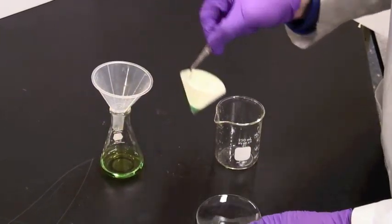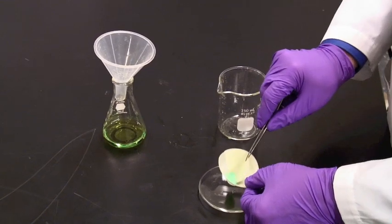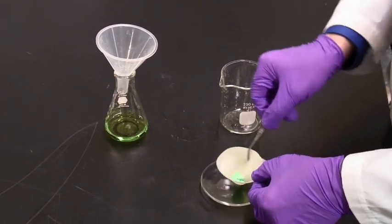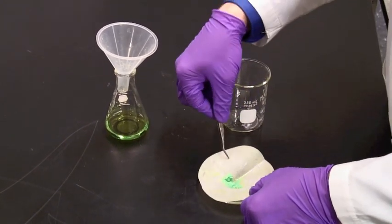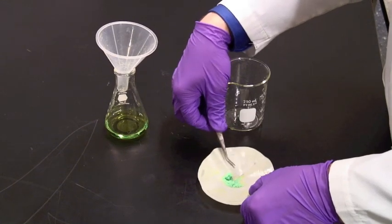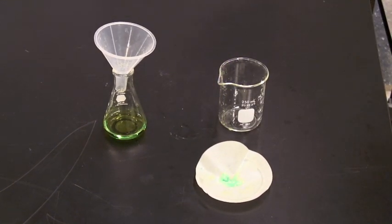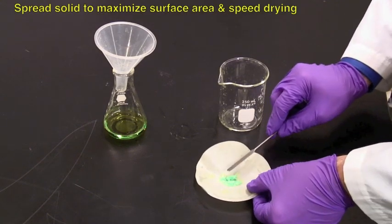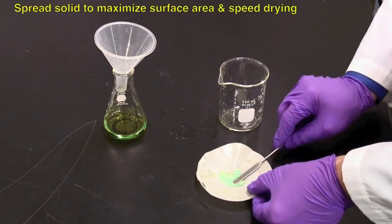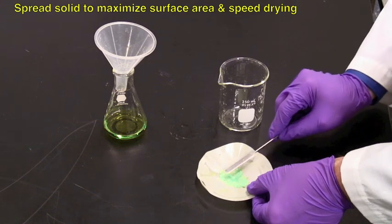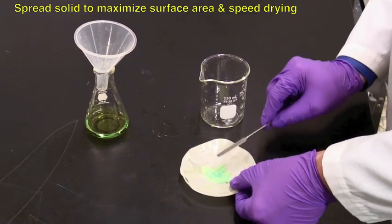Then, take the filter paper out of the funnel and spread it open. If you put this on a watch glass, it will dry more quickly. Sometimes, if you can spread the solid out, you will also get a better drying time by increasing the surface area.